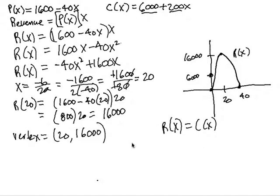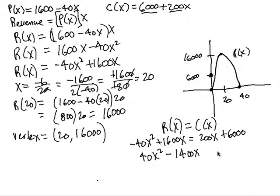So we'll have minus 40x squared plus 1600x equal to 200x plus 6,000. And we can move everything over to one side so that we get a quadratic equation. So we'll have 40x squared minus 1400x plus 6,000 equals 0.